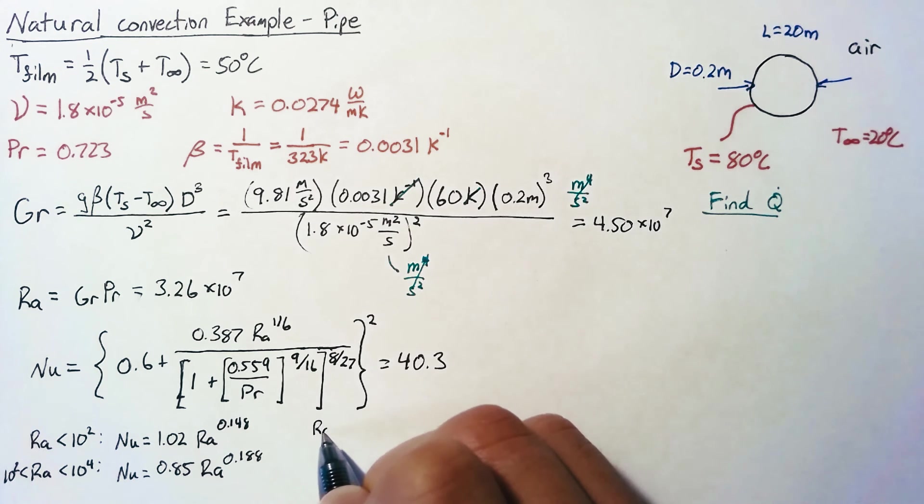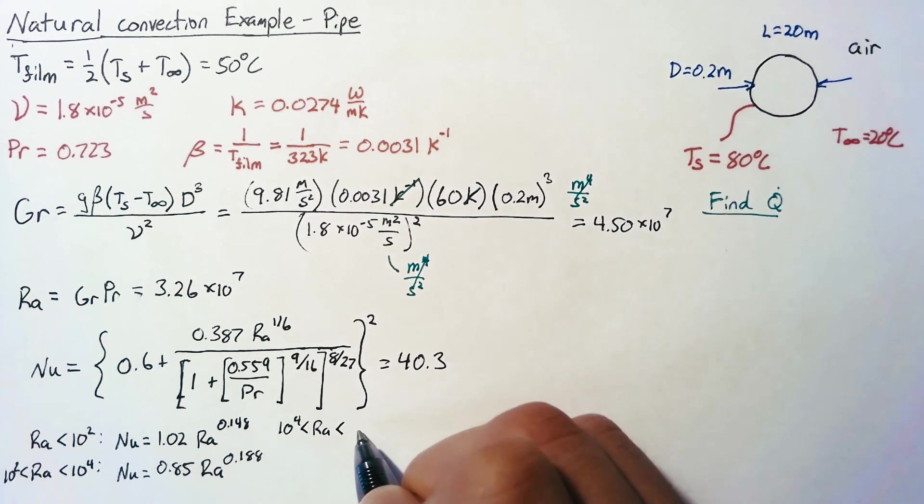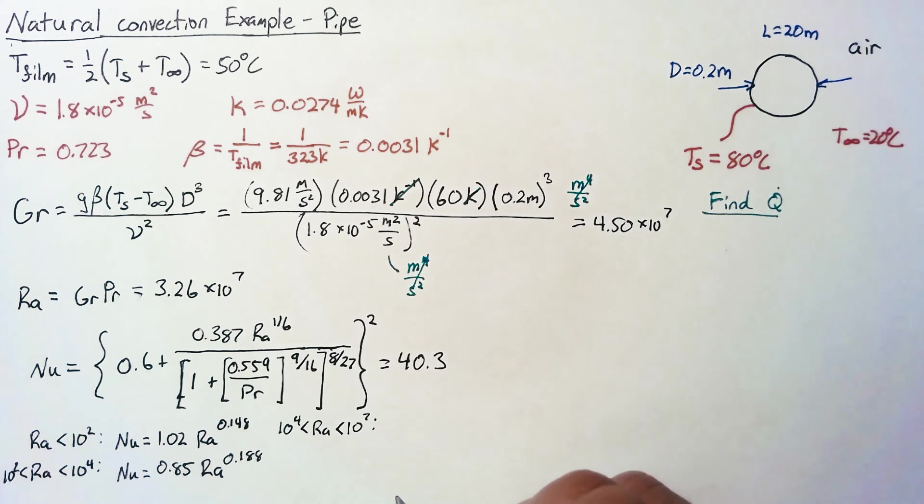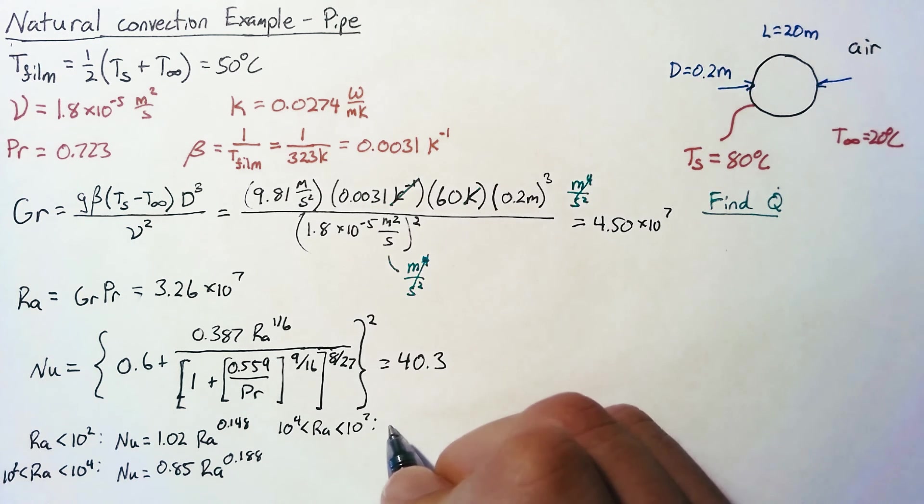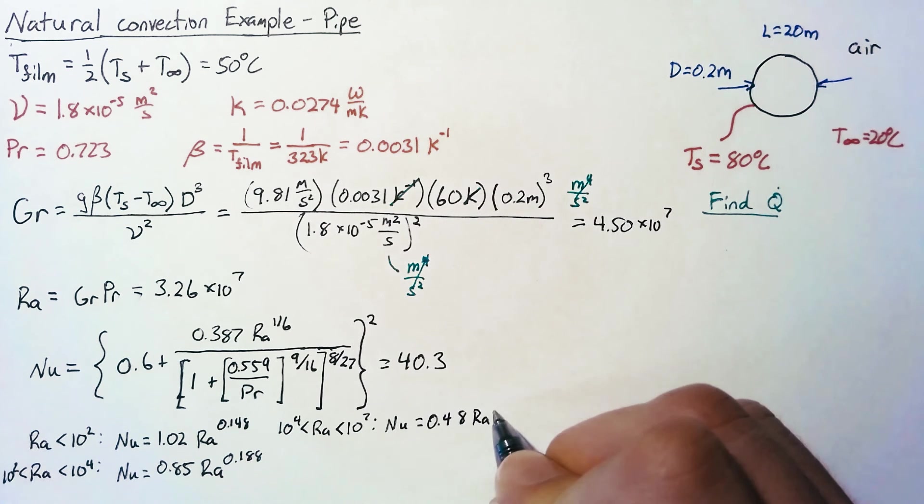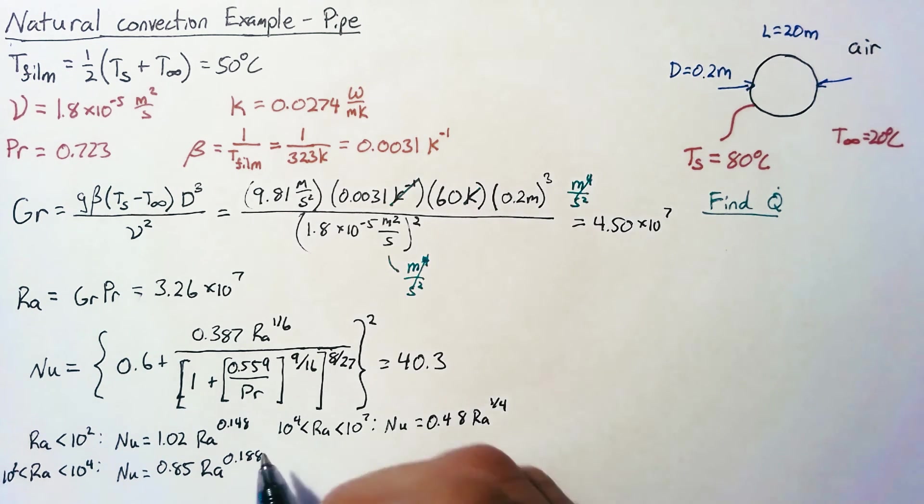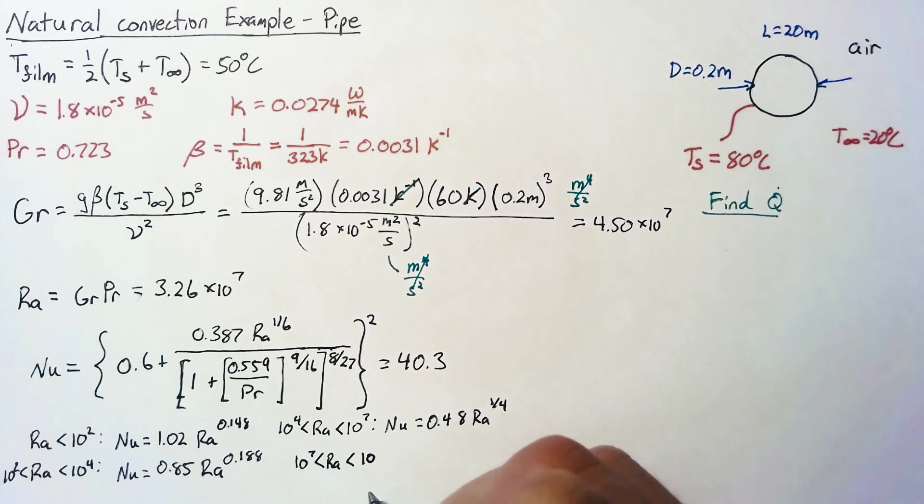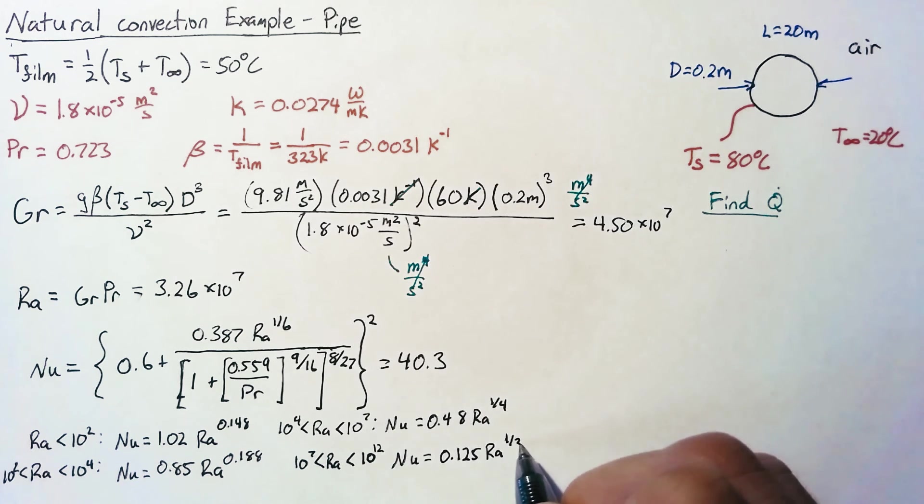If our Rayleigh number is between 10,000 and 10 million, then we use Nusselt number is equal to 0.48 times the Rayleigh number to the one fourth. And then finally, if we're between 10 million and 1 trillion, then this becomes 0.125 times the Rayleigh number to the one third.